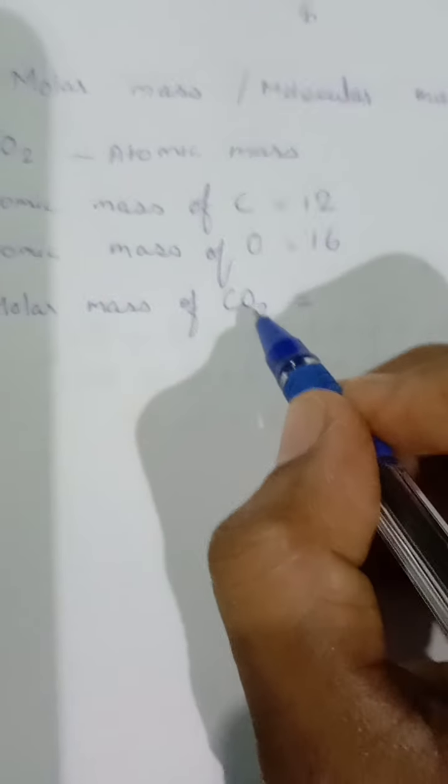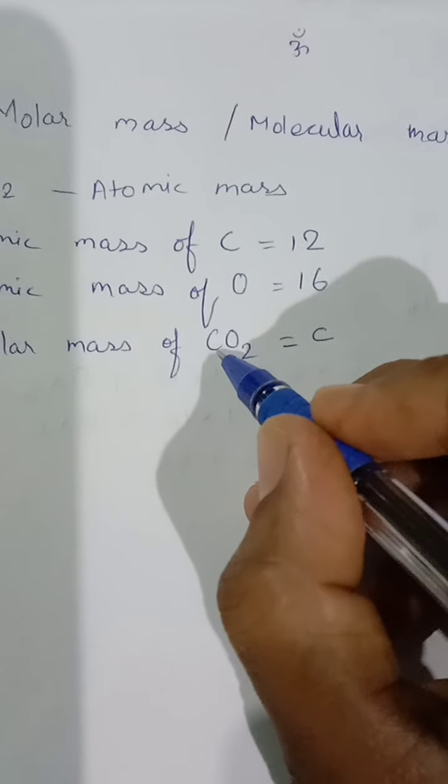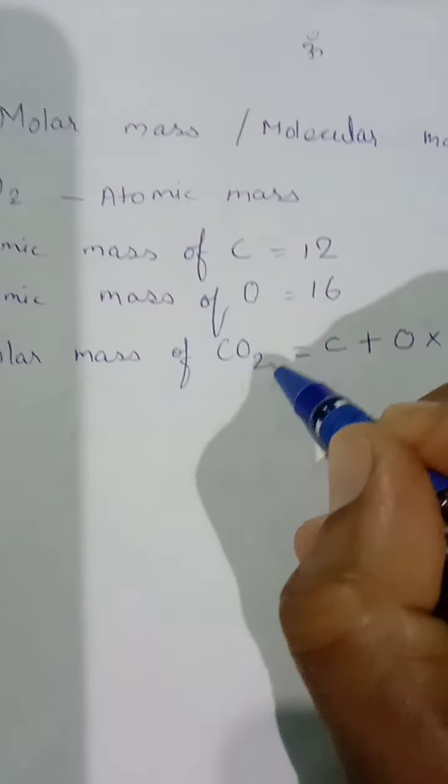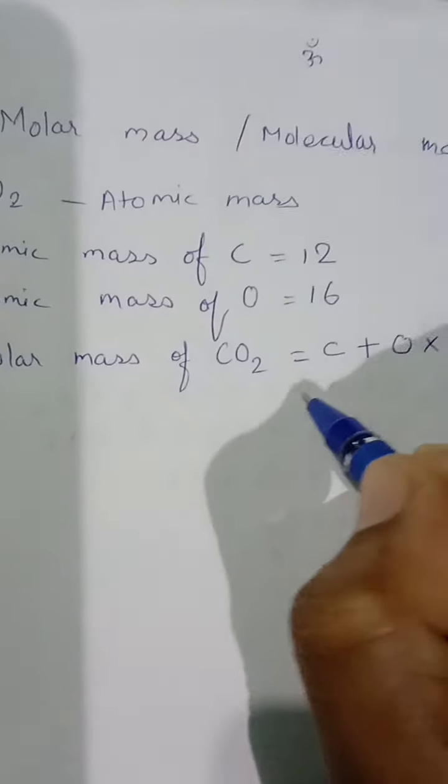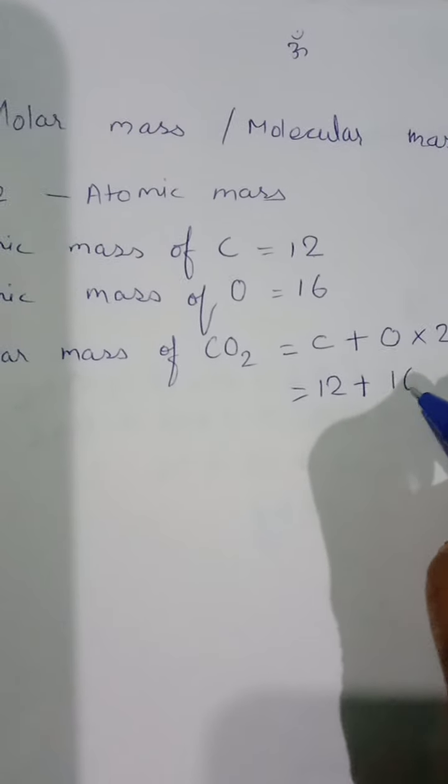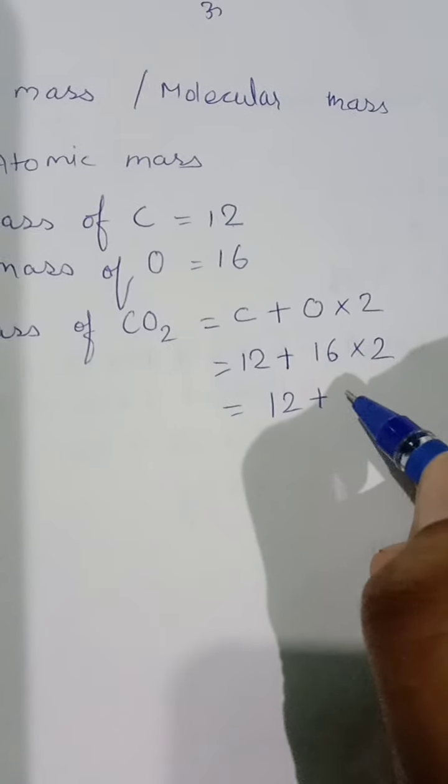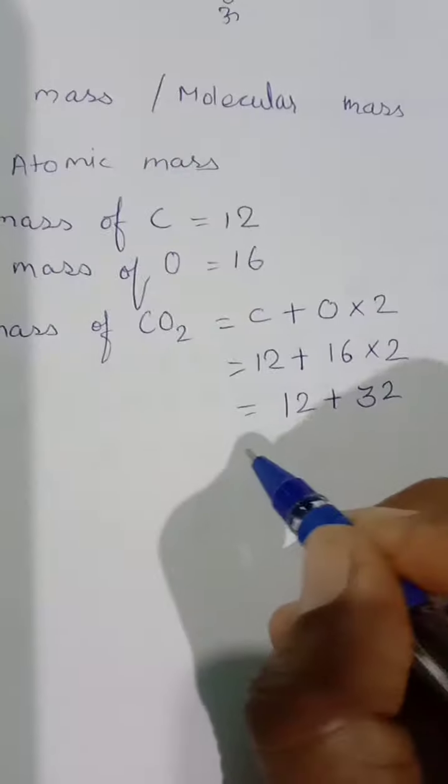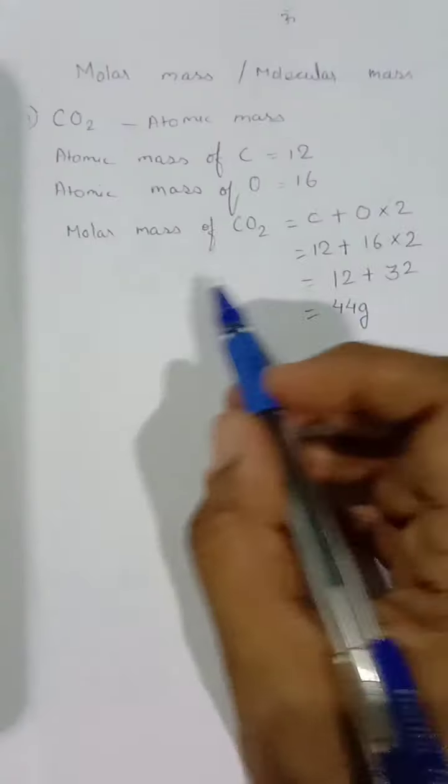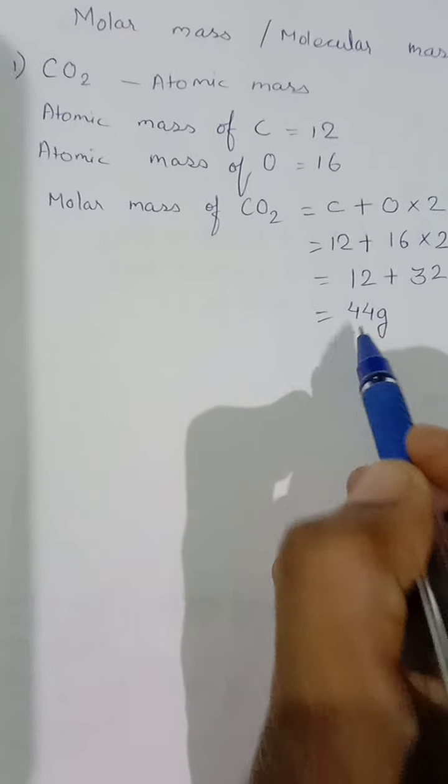We write C plus O times 2. The atomic mass of C is 12, oxygen is 16 times 2. So 12 plus 32 equals 44 grams. This is the molar mass of carbon dioxide. Let's do one more—HNO3.